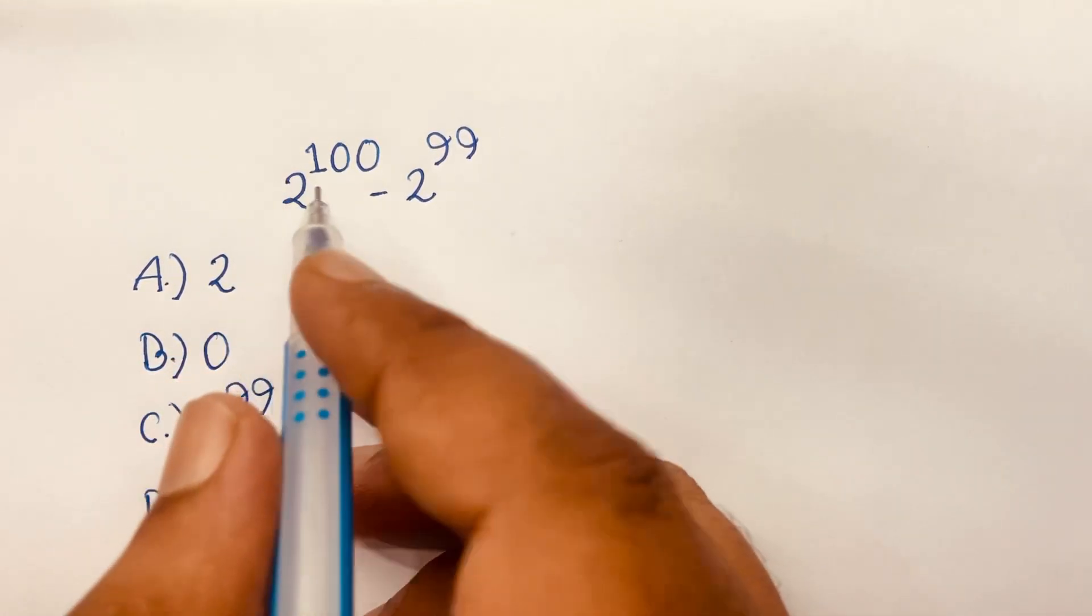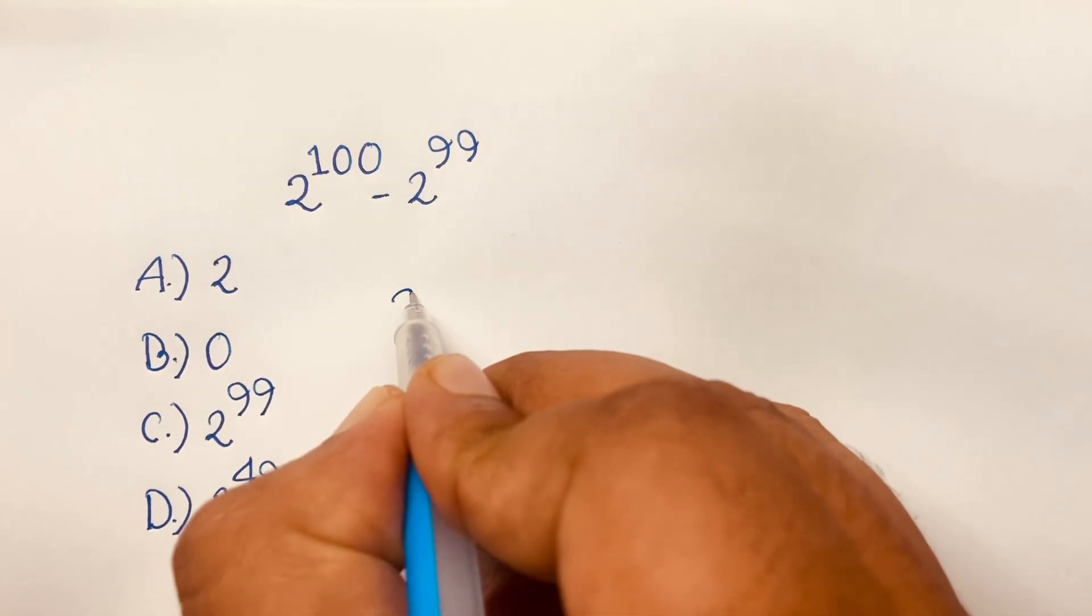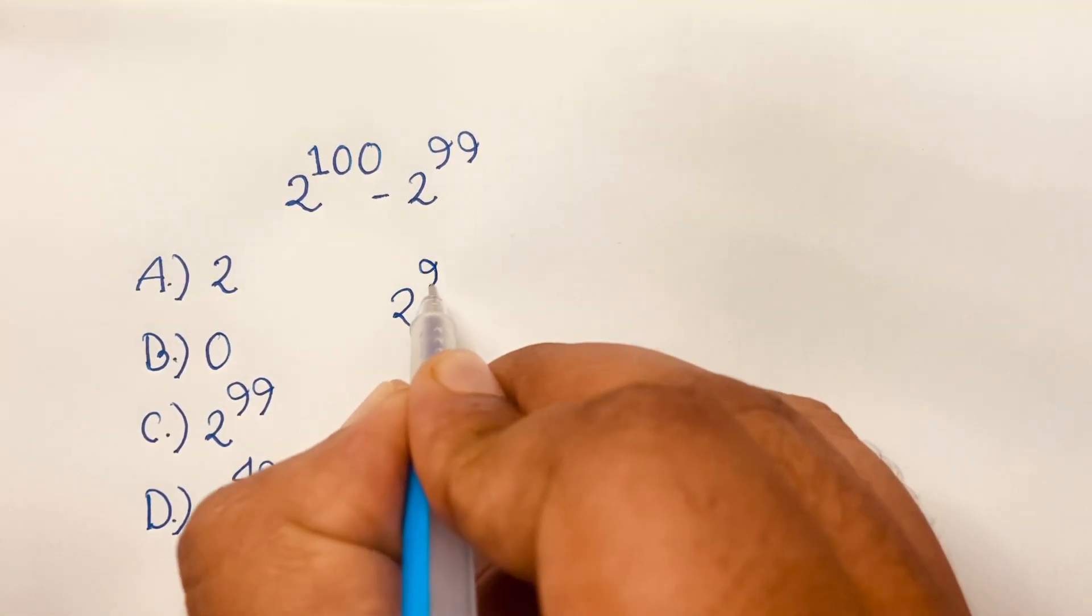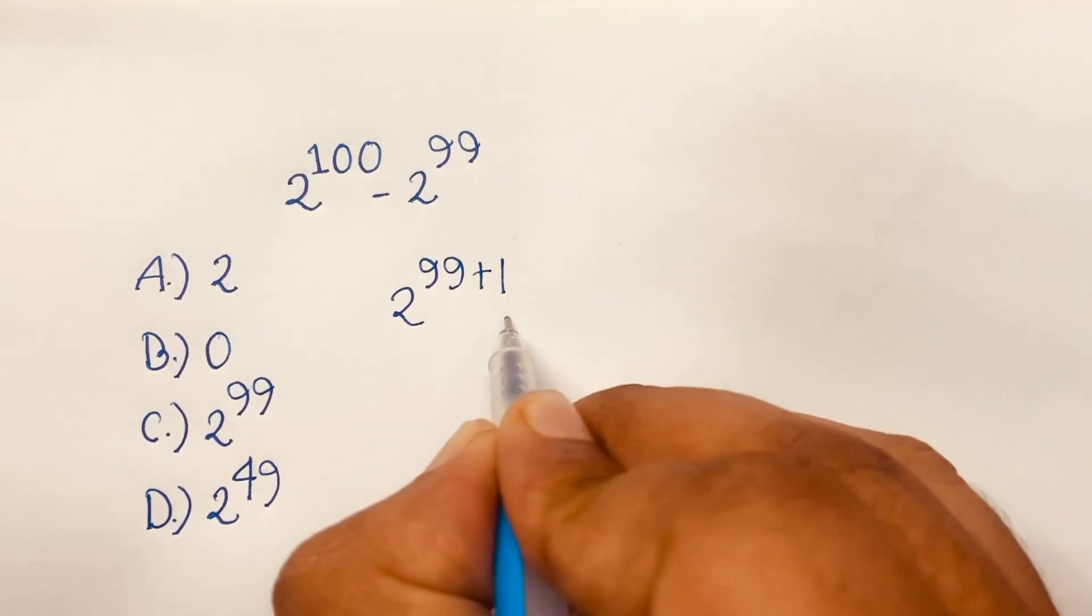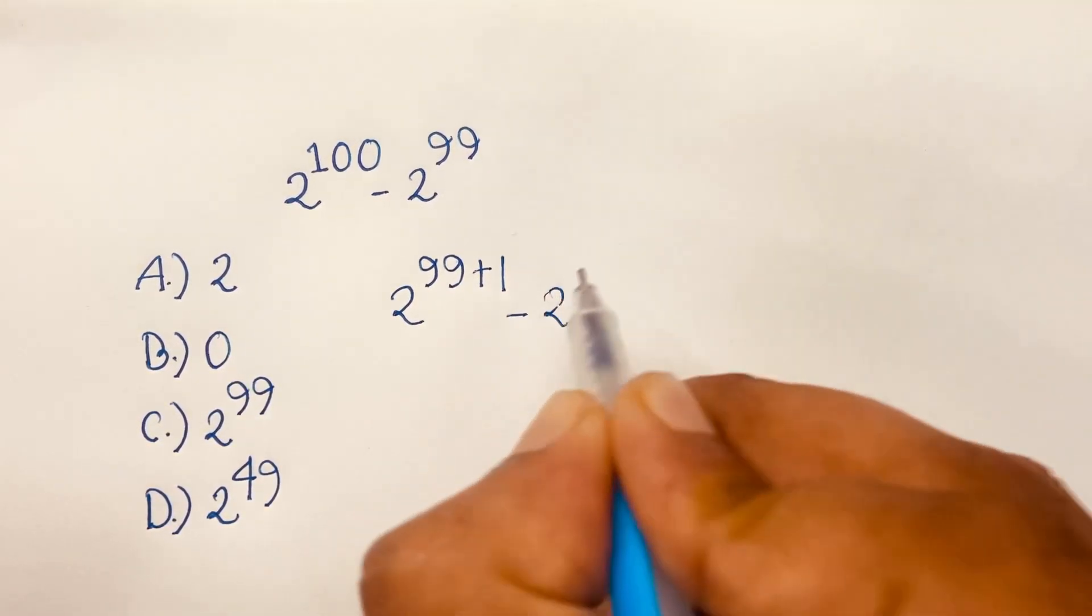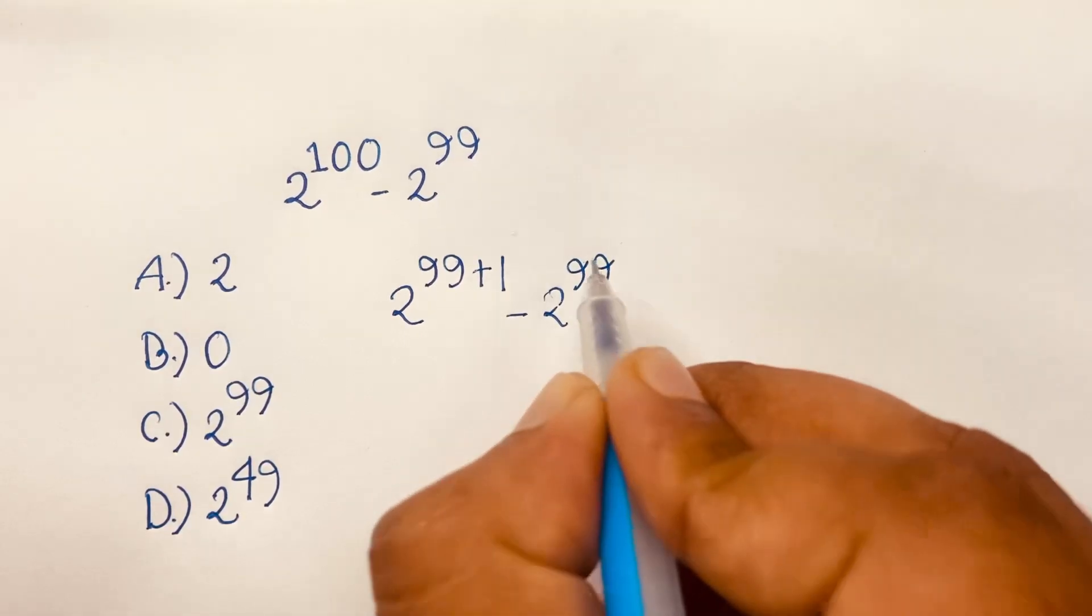So first of all I can say 2 to the power 100, it will be 2 to the power 99 plus 1 minus 2 to the power 99. Because of that, 99 plus 1, it will be 100.